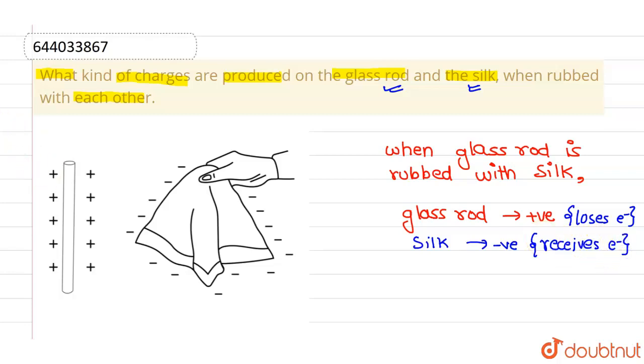...is rubbed with this particular glass rod, then glass rod is acquiring positive charges and the silk cloth is acquiring negative charges, as you can see in this diagram. I hope you understood, thank you.